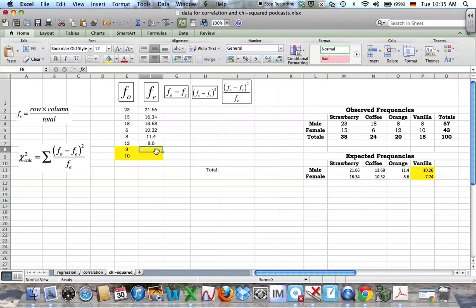And make sure you pair them up correctly. So the males who like vanilla, the expected frequency is 10.26. And the expected frequencies for females who like vanilla is 7.74.